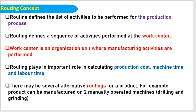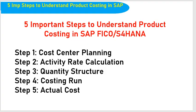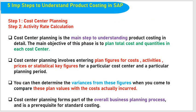Also, I covered the routing concept. Today in Part A I'm going to tell you about cost center planning and activity rate calculation. In Part B I will cover quantity structure, costing run, and actual costing. I will cover all these topics in the next video. Now let's understand what is cost center planning and activity rate calculations.